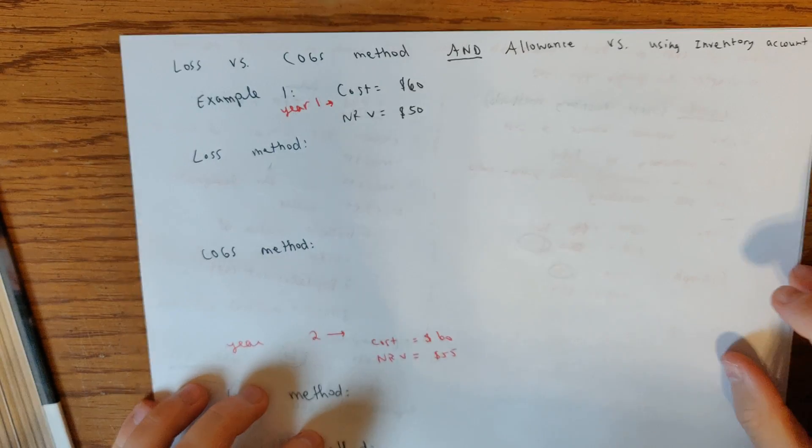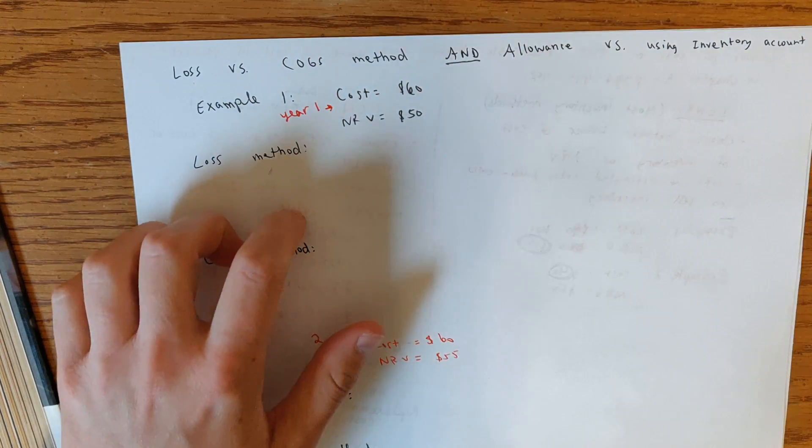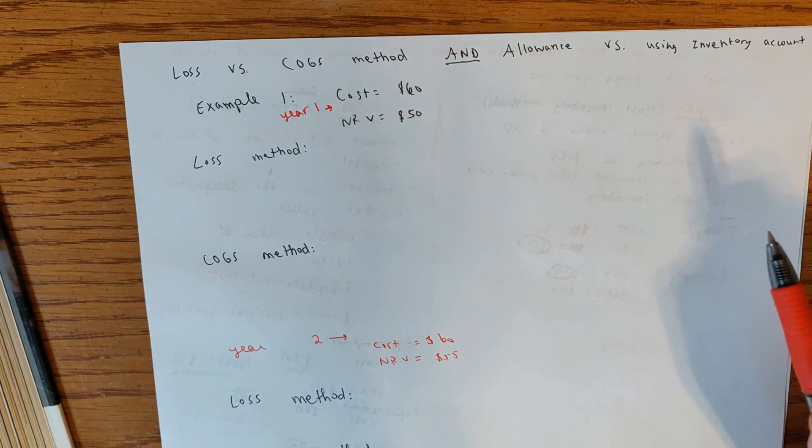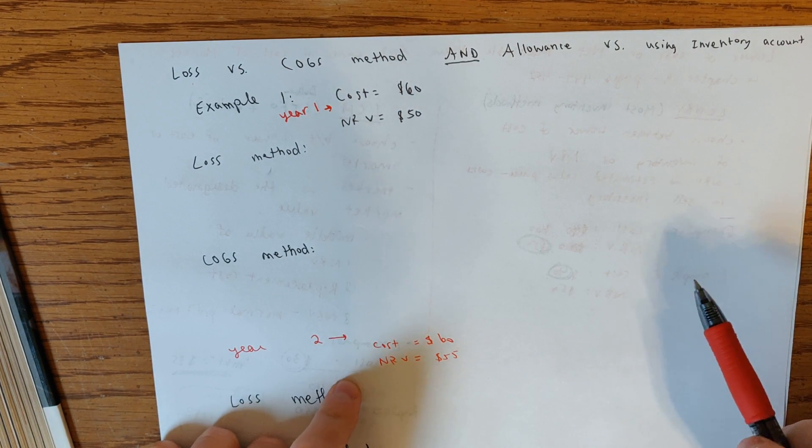All right guys, back with another video. This is the second video for Chapter 9 related to lower cost or net realizable value and lower cost or market.